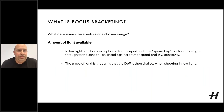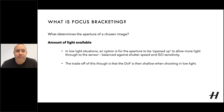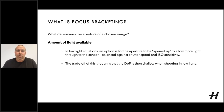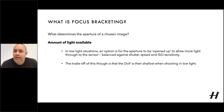Probably the most important use of aperture is the amount of light available. In low light situations, an option is to open up the aperture to allow more light through to the sensor. This is balanced against the shutter speed and ISO sensitivity to give the exposure. The trade-off is that when opening up the aperture, the depth of field becomes very shallow. So a combination of needing front-to-back focus of an object and low light can be a difficult combination.